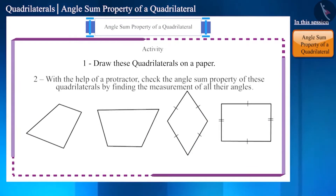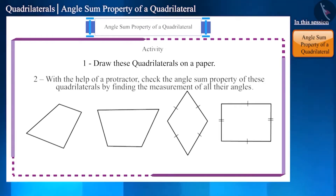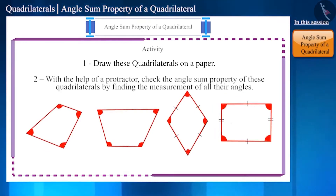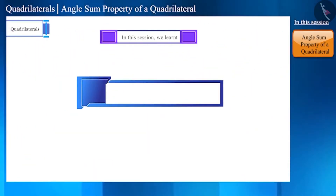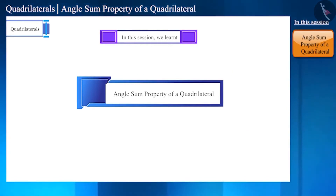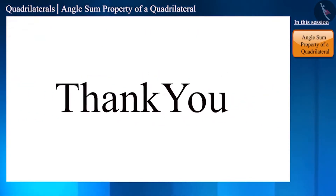Before ending this session, here is an activity — do this together with your classmates. In the end you will find that even though these quadrilaterals are different and smaller or bigger in size, the sum of the measurements of their internal angles is 360 degrees. That's all in this session. Today we discussed the angle sum property of a quadrilateral. In the next video we will solve some questions based on this topic. Thank you.